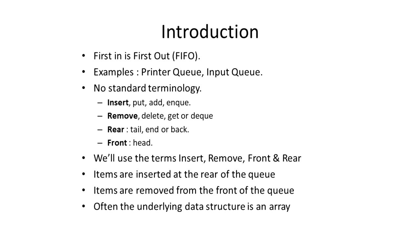When we come to model the queue in code, we refer to these operations sometimes through different names. To join the queue is known as being inserted into the queue, or sometimes referred to as enqueuing. To exit the queue is otherwise known as being removed from the queue, or alternatively dequeued or dequeuing. In code we have pointers to the first item in the queue, known as the front or head of the queue, and a pointer to the last item, known as the rear, tail, or back of the queue.